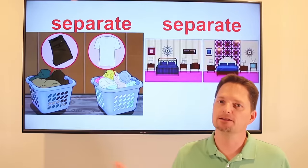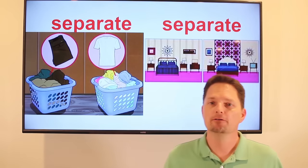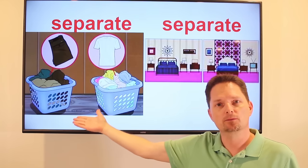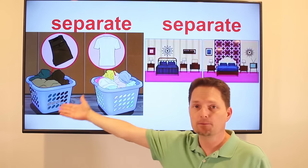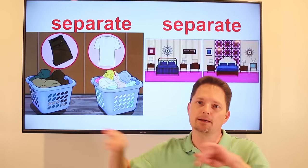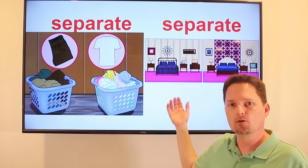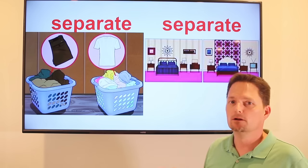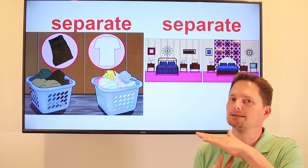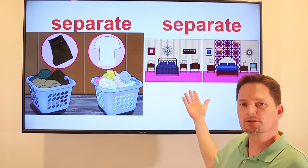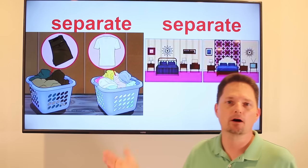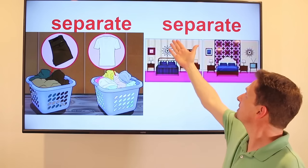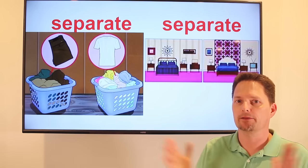Our last example is a very special word with two pronunciations. When 'separate' is used as a verb or action, it's 'separate.' I need to separate the laundry — separate the darks from the whites. But as an adjective or description, we say 'separate' — two syllables. I need two separate hotel rooms. So we're focusing on the pronunciation 'separate,' not 'separate,' but 'separate' together. Separate rooms.